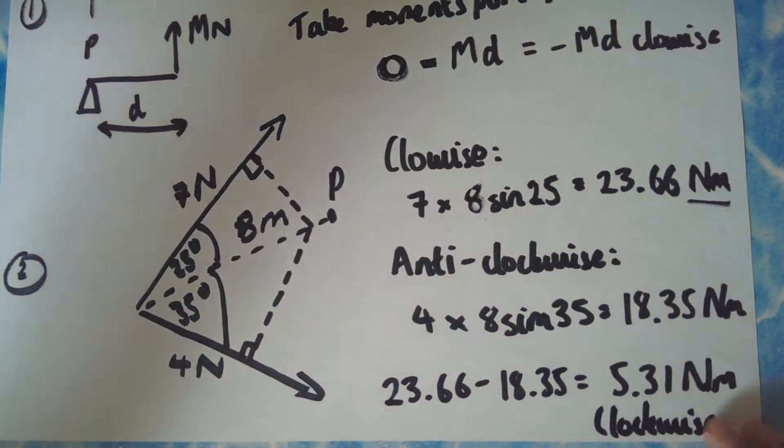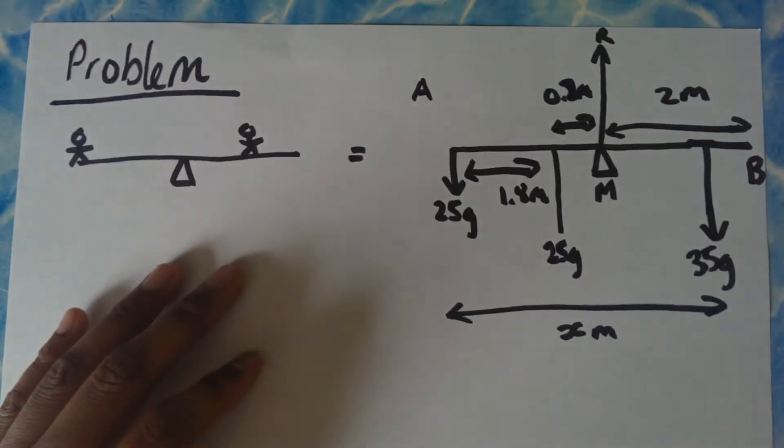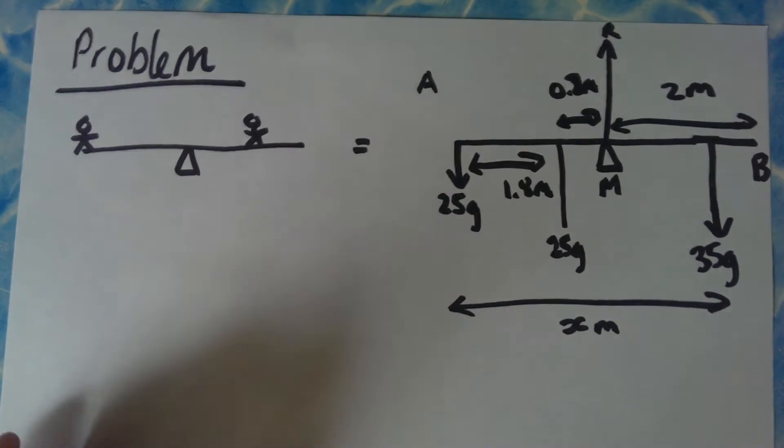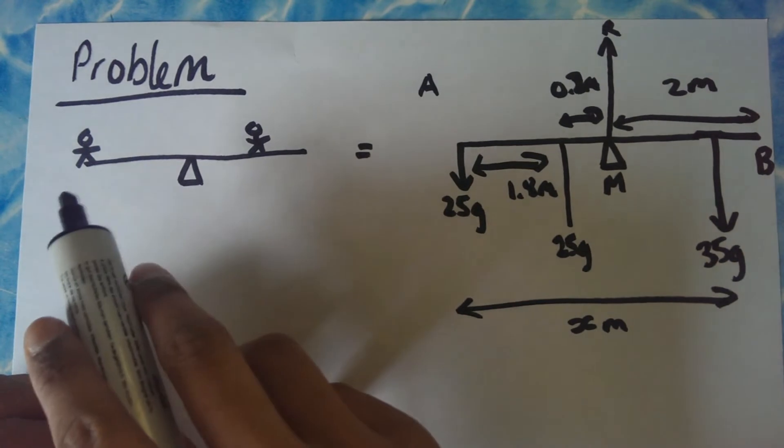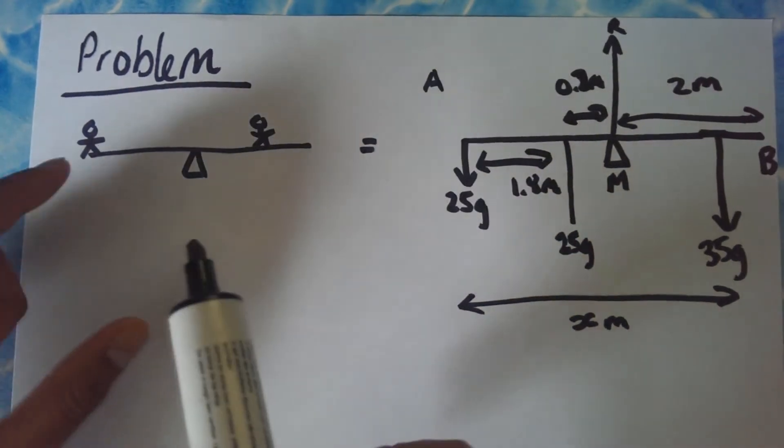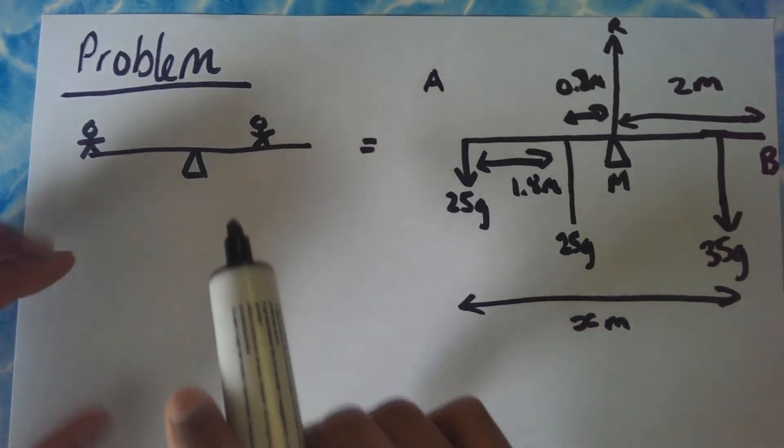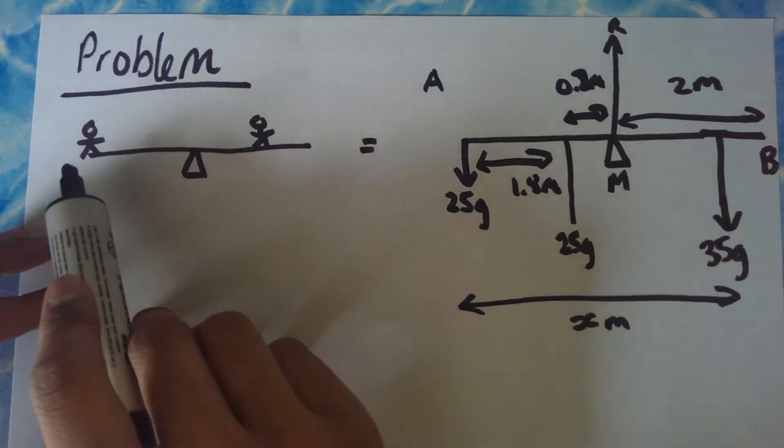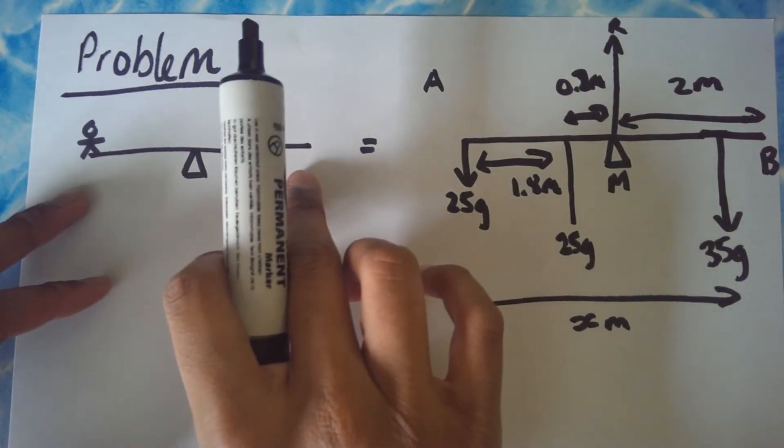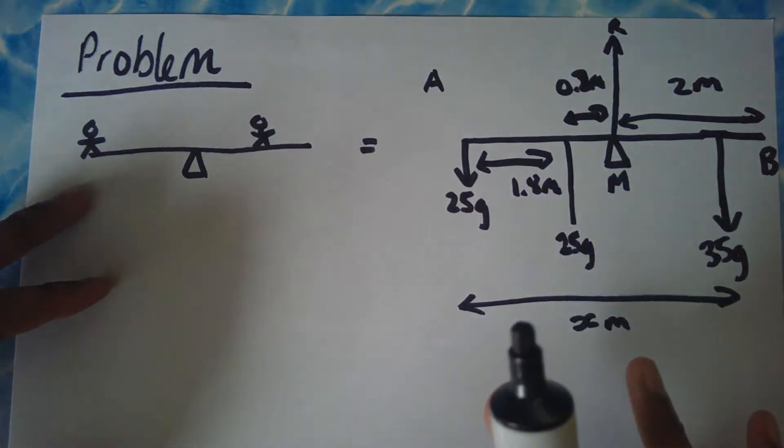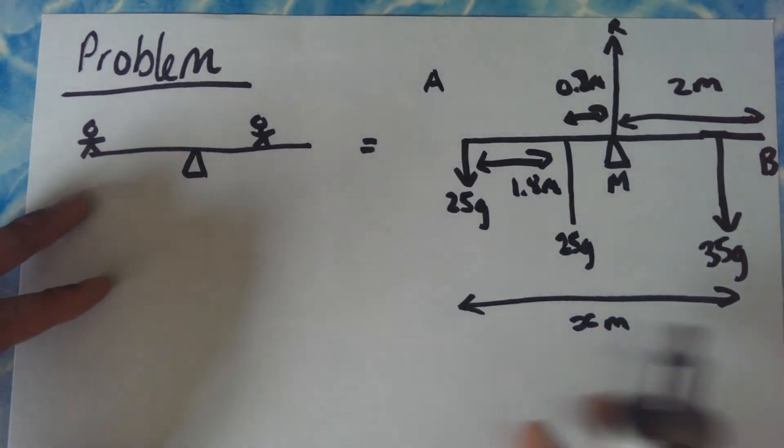So one final thing I think that's important to consider in moments is when you have rods and a uniform and a non-uniform rod. So here's a key example as you can see from my brilliant diagram. There's two people on a swing, I guess, and one person sitting at the edge and one person sitting somewhere else.